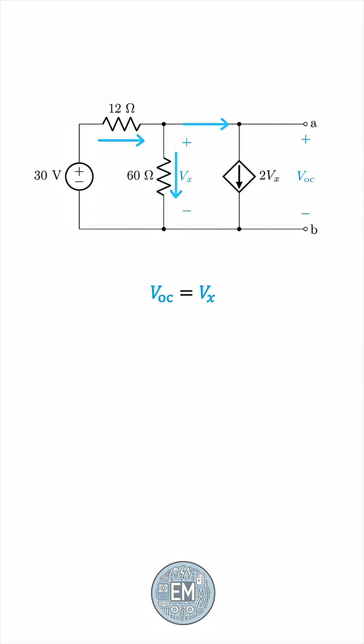The incoming current is 30 minus VX over 12. The current going down is VX over 60, and the dependent source current is 2VX. Let's clear the denominators, simplify, and solve for VX.